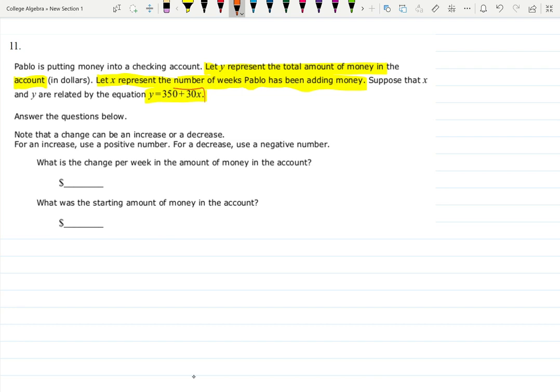y equals 350 plus 30x, where again x is time and y is money. That sounds good. So we are asked: